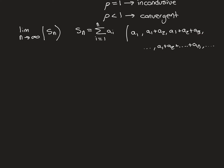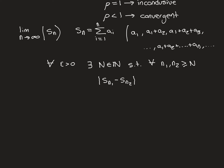Applying the Cauchy criterion: the terms of the sequence must get and stay indefinitely close to one another. The rigorous way to capture that is: for all epsilon greater than zero, there exists some big N in the natural numbers such that for all n_1 and n_2 greater than or equal to big N, the distance |S_{n_1} - S_{n_2}| is less than epsilon.